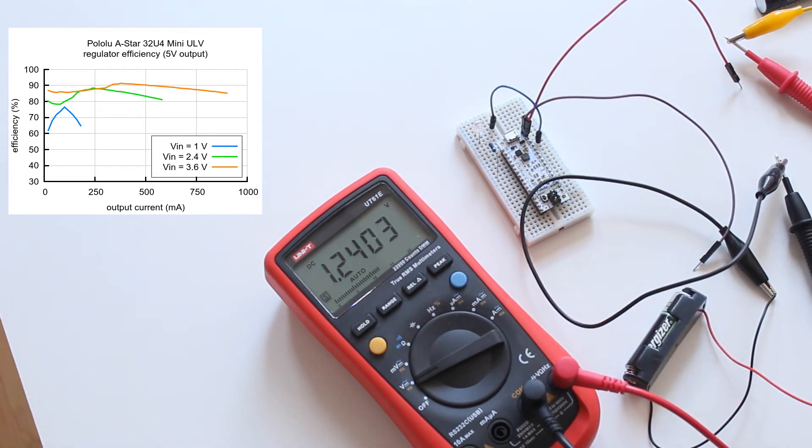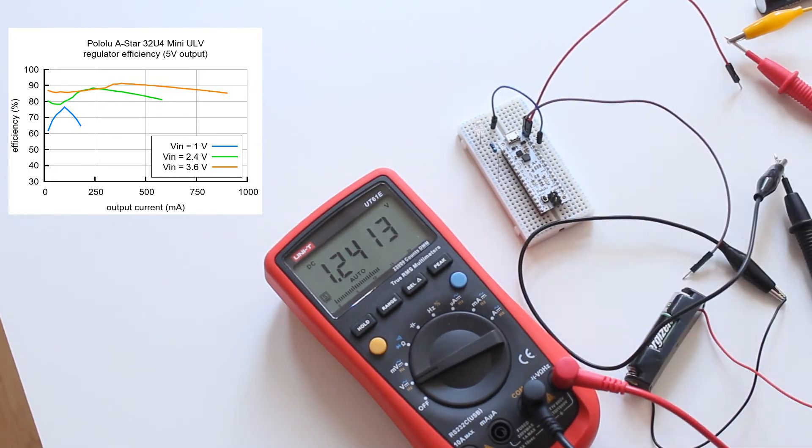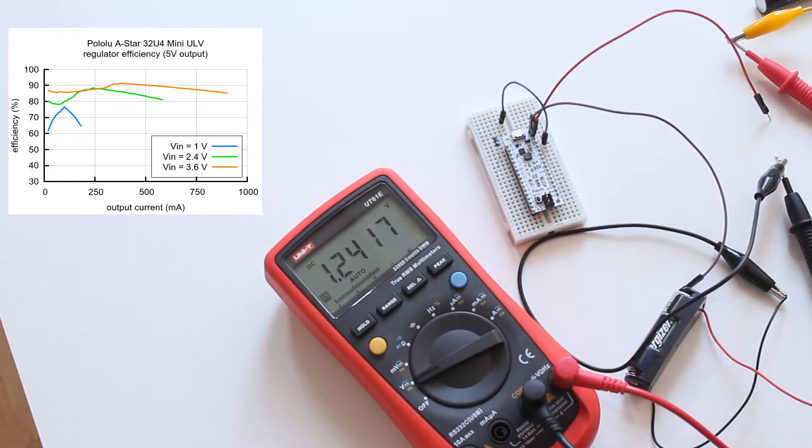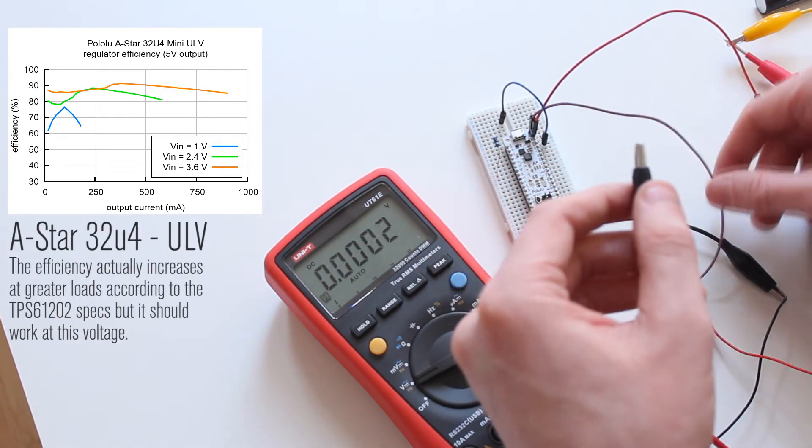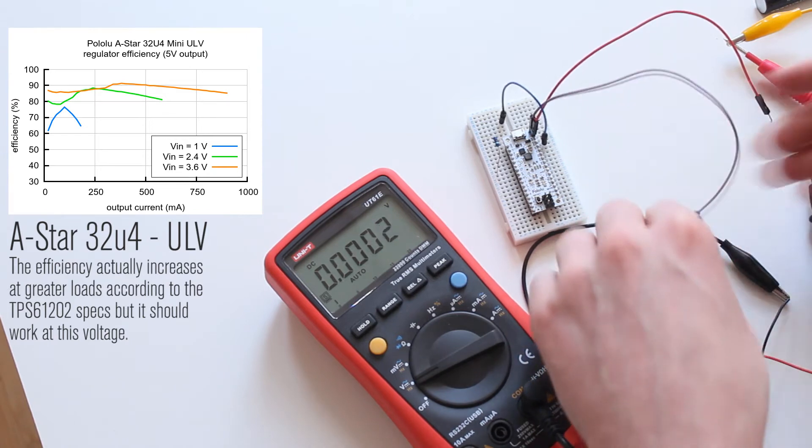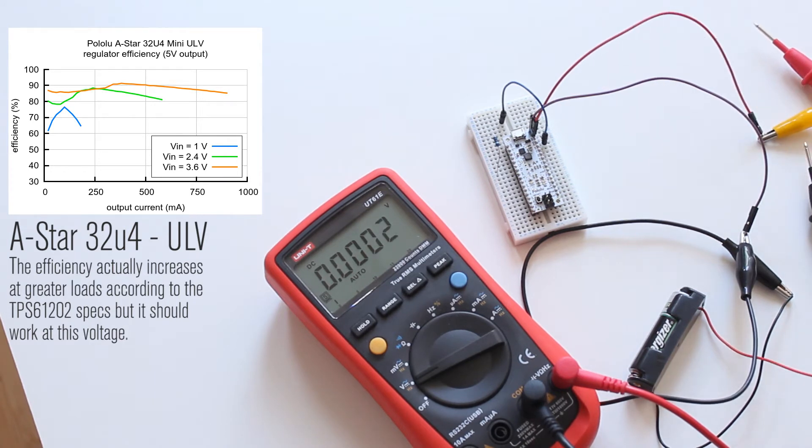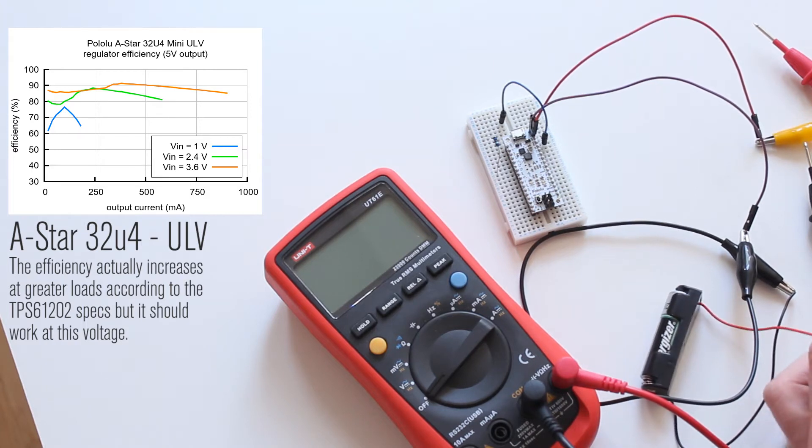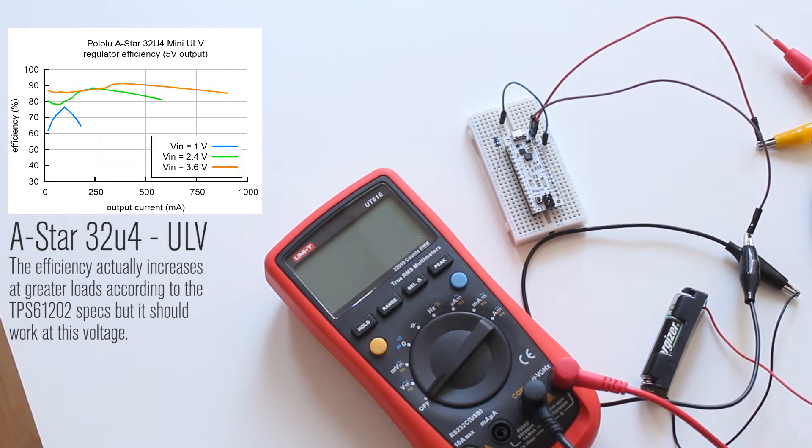So we're rocking 1.2 volts but this doesn't want to come on. This is the ultra low voltage version and it doesn't seem to want to work with that. So let's just pull out this LED so we're not drawing any current. Well not very much. And we'll plug all of this back in and see if it will just turn on. No, not at all. It does not like that. So that's interesting that it won't work with a single AA battery.